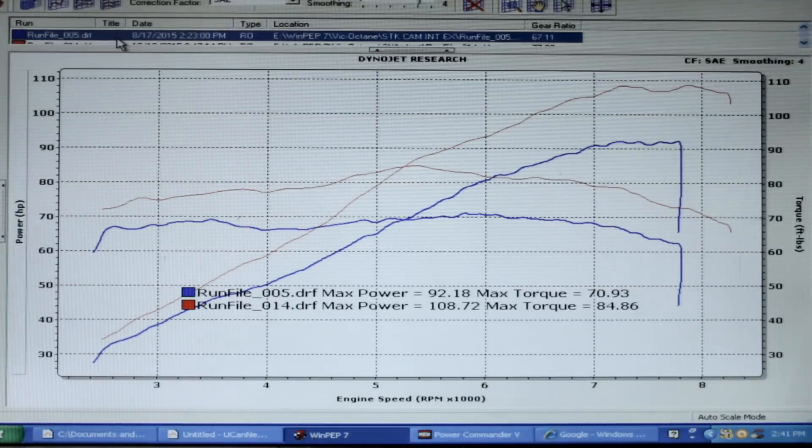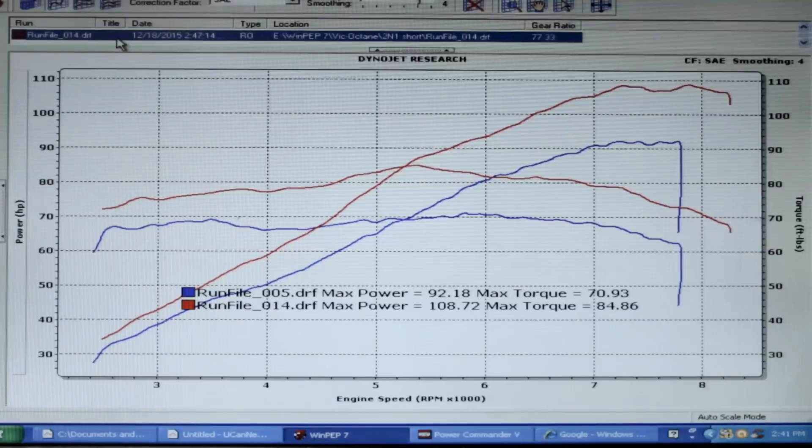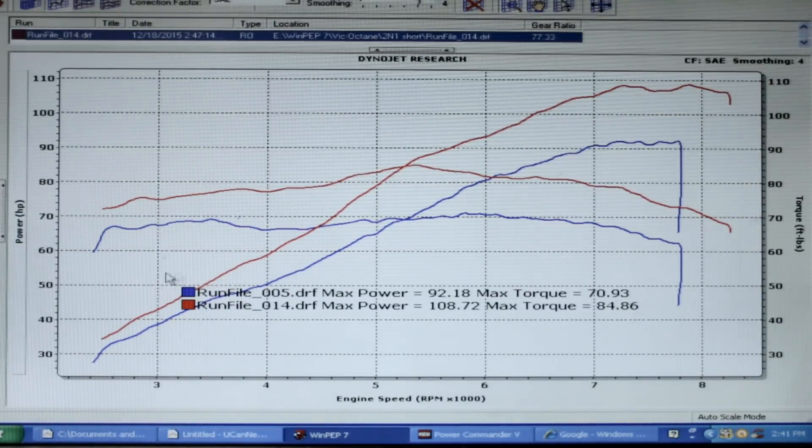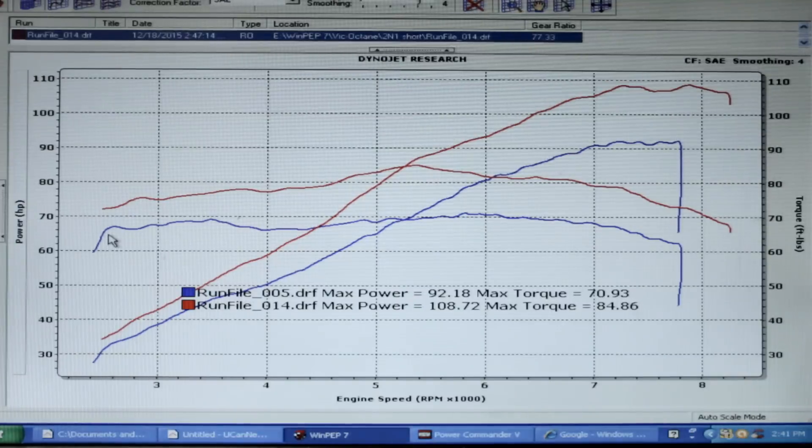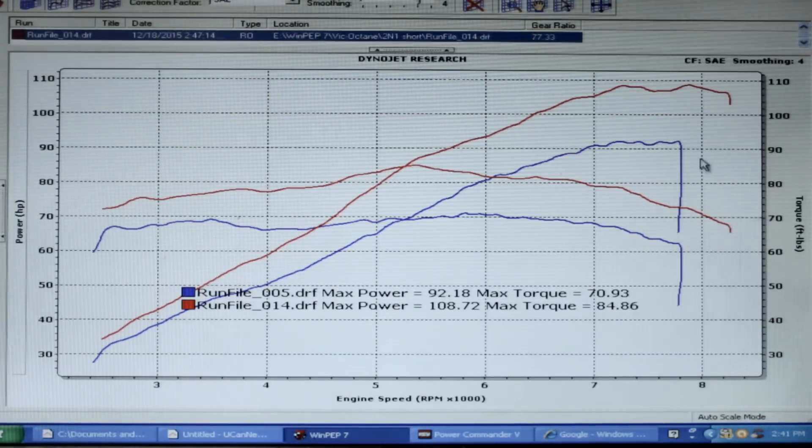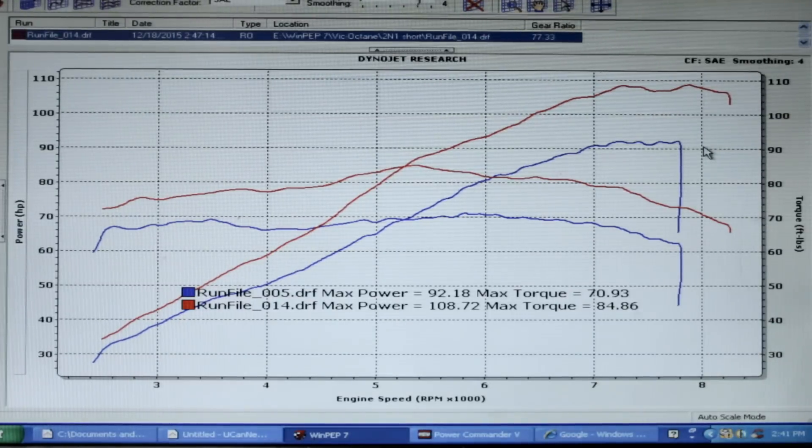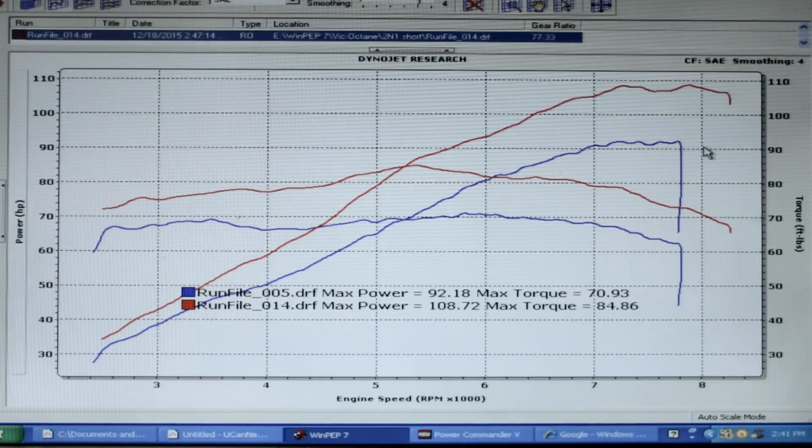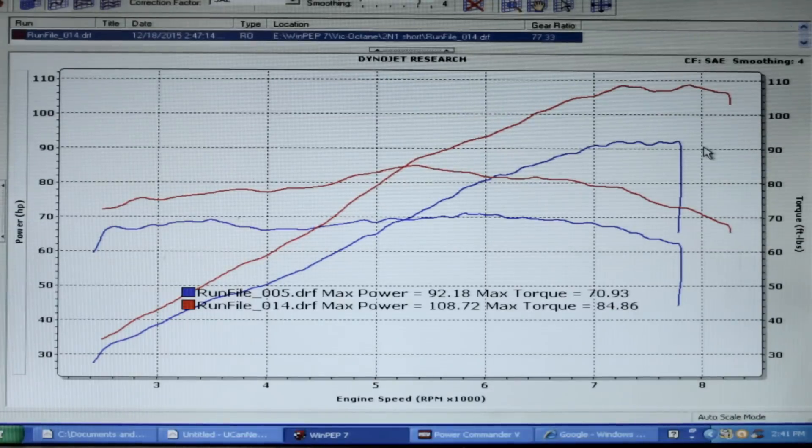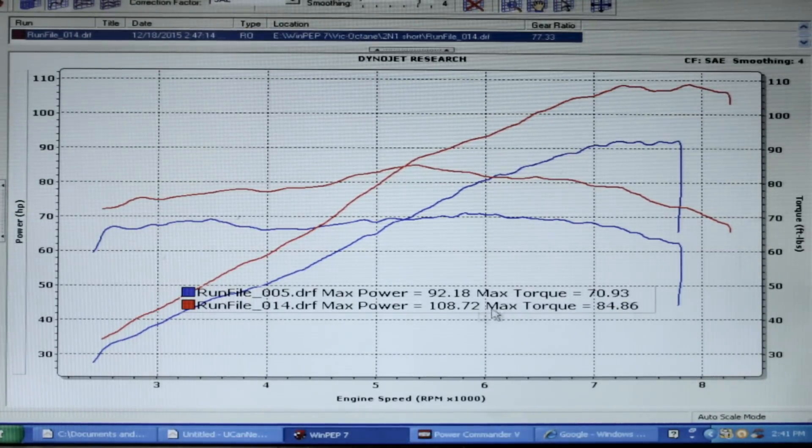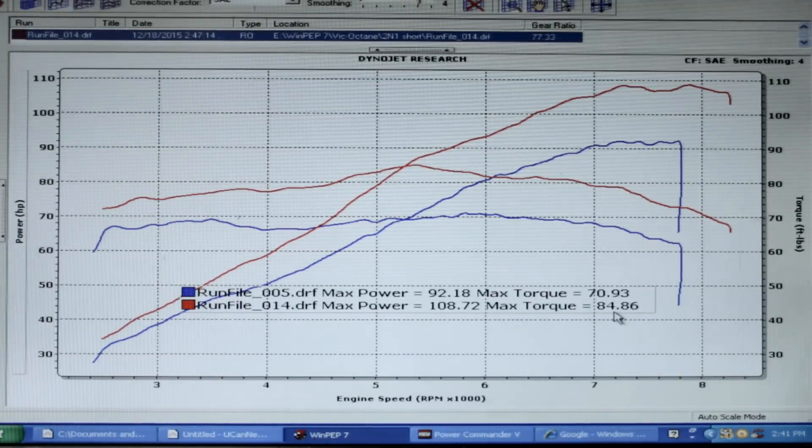Now this is going to be the graph that you've just seen as a before and after comparison. And as you can tell, it's very substantial gains in horsepower and torque across the board. I mean, right from the beginning of the run all the way to the end, we've got huge gains on this little motorcycle. So we're going from 92 horse to 108 horsepower with a good pipe and intake on it, and we're going from 71 foot-pounds to almost 85 foot-pounds of torque.